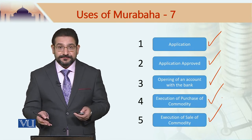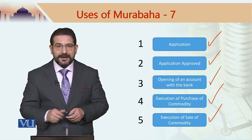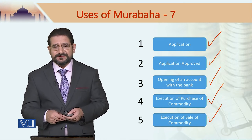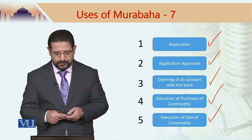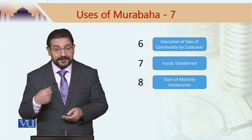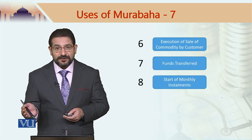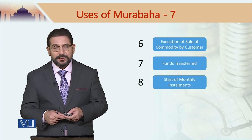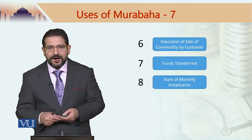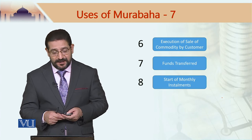In the days of COVID, if someone cannot go to a branch, you can do it over the internet, call the bank, or use any other electronic means. In fact, some Islamic banks are now offering this kind of service through WhatsApp as well. The sixth step is execution of sale of the commodity by the customer. Once I have bought the commodity, I would sell it to commodity broker 2. Once that happens, the funds are transferred into my account, and afterwards I would start paying the amount of debt in monthly installments.